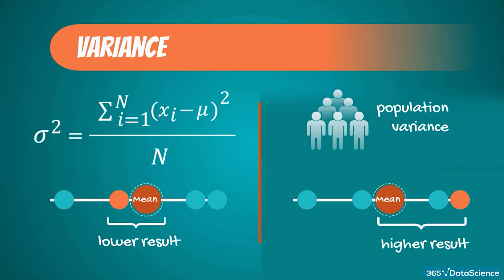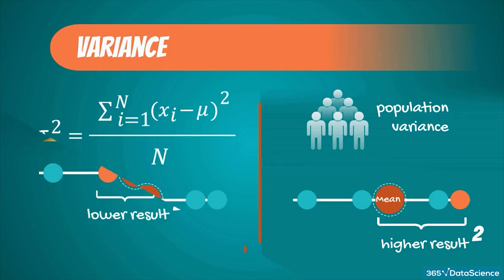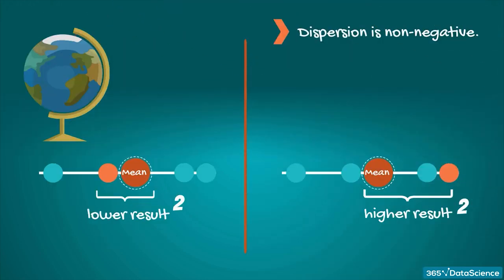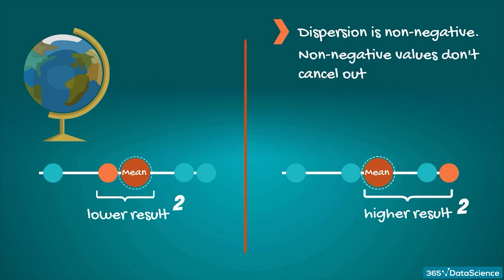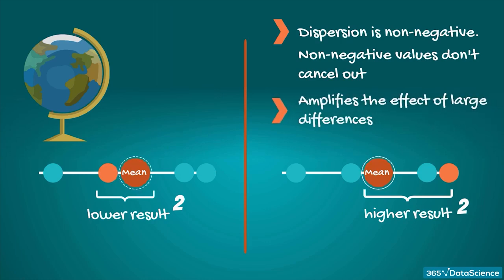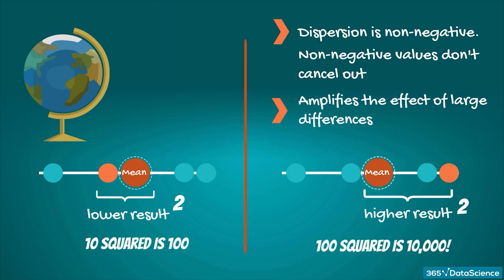Why do we elevate to the second degree? Squaring the differences has two main purposes. First, by squaring the numbers, we always get non-negative computations — dispersion is about distance, and distance cannot be negative. Without squaring, we would obtain both positive and negative values that, when summed, would cancel out, leaving us with no information about the dispersion. Second, squaring amplifies the effect of large differences. For example, if the mean is zero and you have an observation of one hundred, the squared spread is ten thousand.